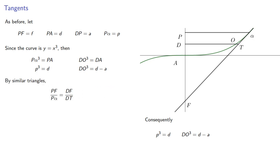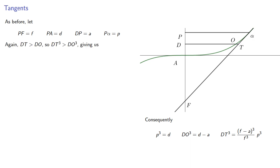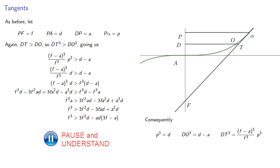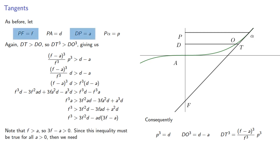And again, by similar triangles, we have DT cubed. And again, if our tangent is outside of the curve, we need DT greater than DO, so DT cubed is greater than DO cubed, and so we find. Note that F is greater than A, so this quantity we're subtracting is a product of two positive numbers. Since this inequality must be true for all A greater than 0, we need, and so F is greater than or equal to 3D.